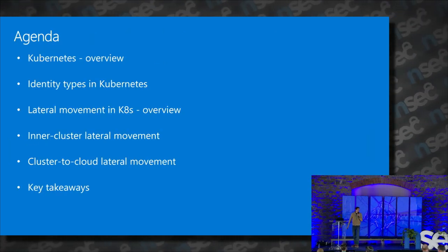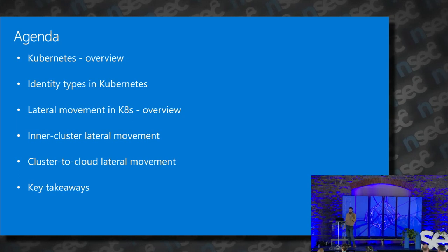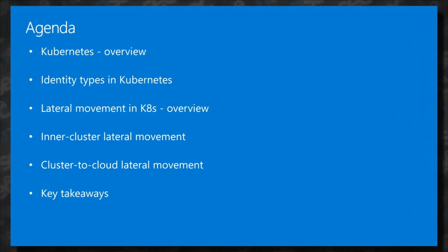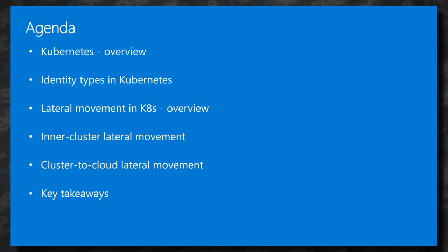This is the agenda for today. We are going to start with a short overview of Kubernetes, then we'll talk about identity types in Kubernetes, we'll speak about lateral movements both in the cluster and from the cluster to outside resources, and then we'll have some takeaways.